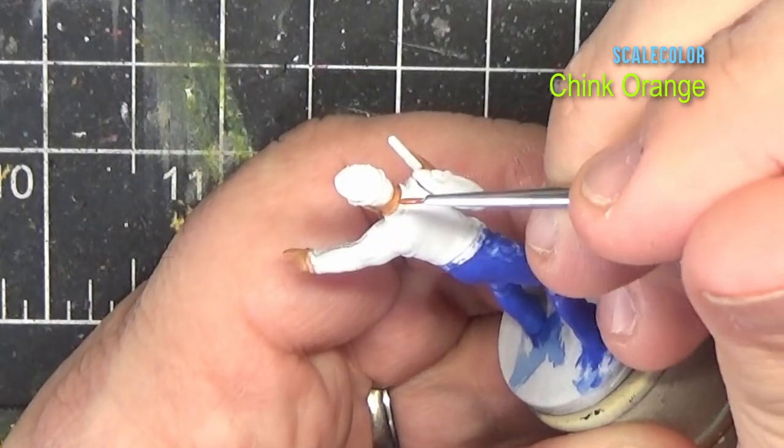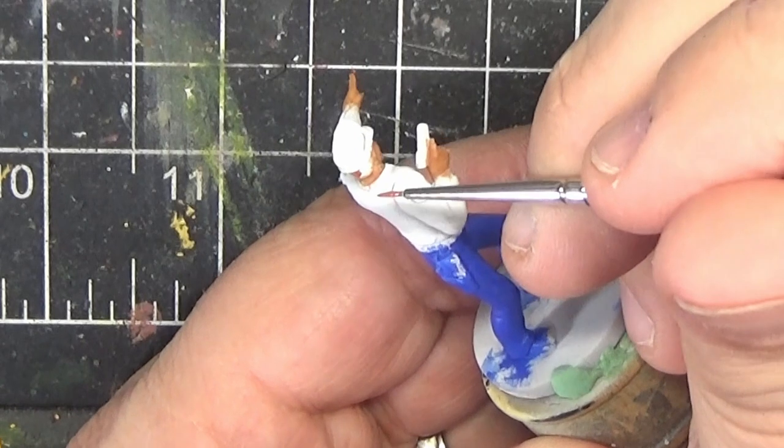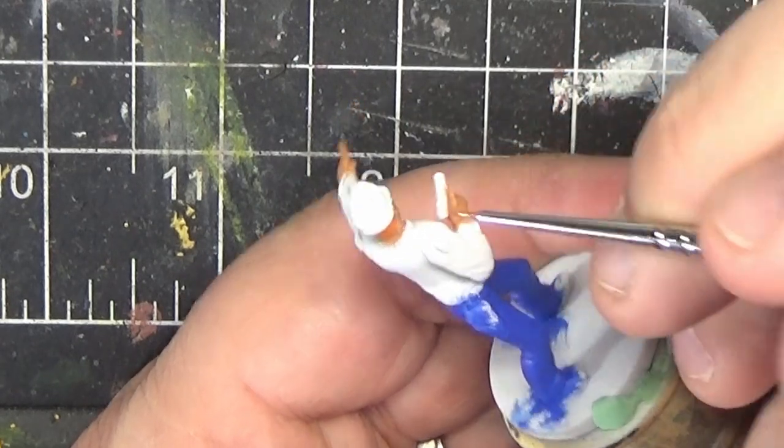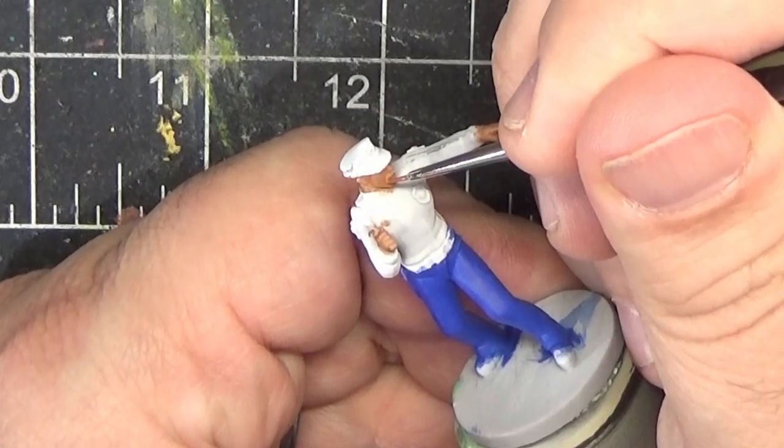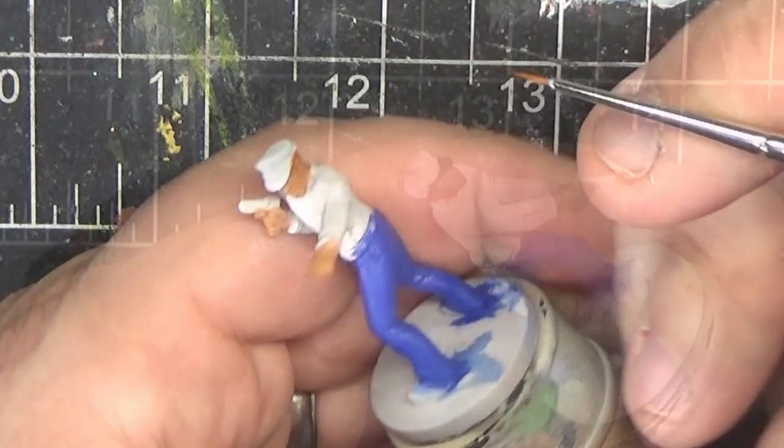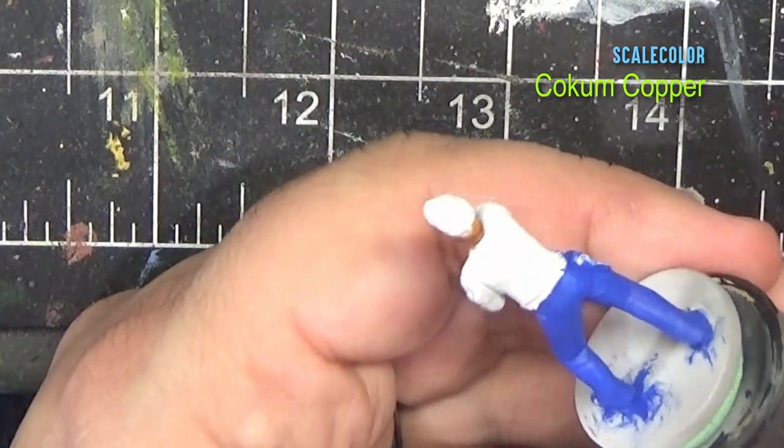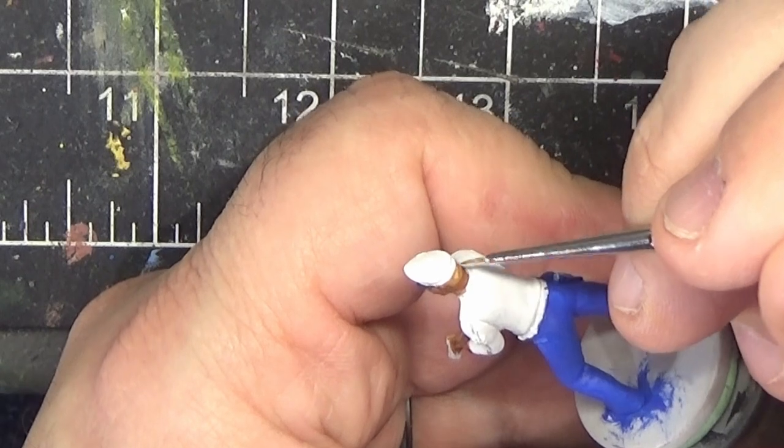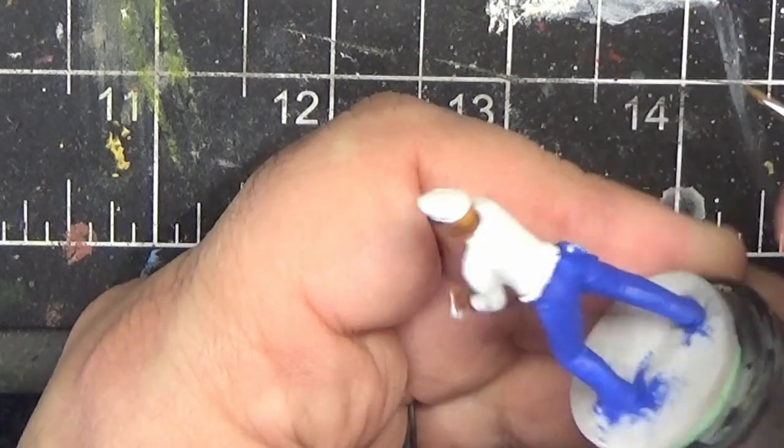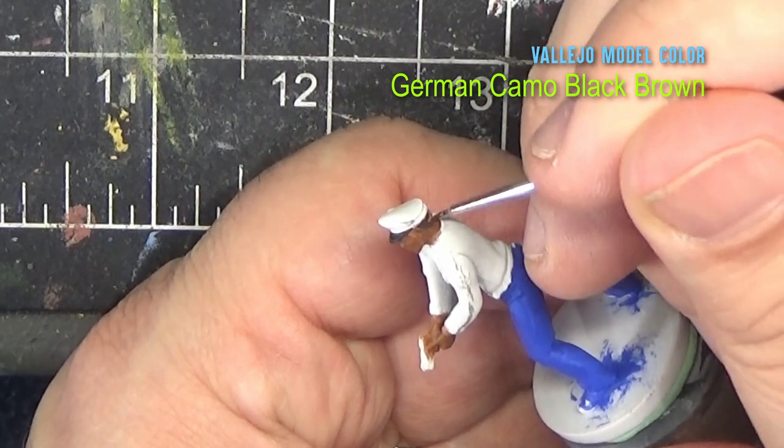Before moving on, I'm going to go to one of the light-skinned policemen and paint the hair using Chink Orange. And remember, this sculpt has the mustache that we need to hit as well. The other light-skinned officer is going to get Khokum Copper as a hair color, and for the final officer I'm using German Camo Black Brown.